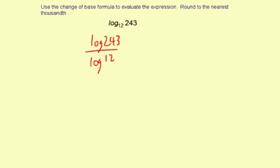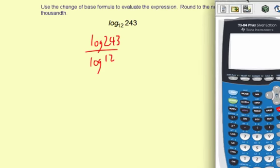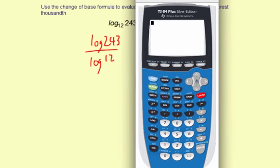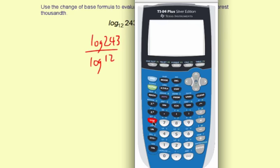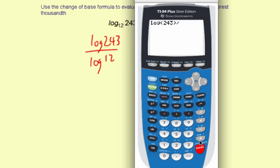We can just calculate that on the calculator. So, log of 243 — close the parentheses — divided by log of 12, close the parentheses again. Enter.